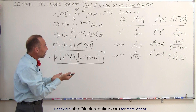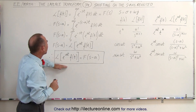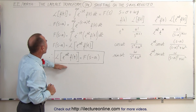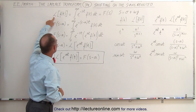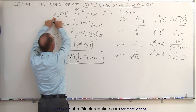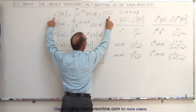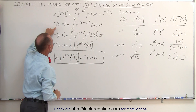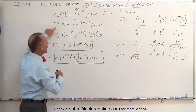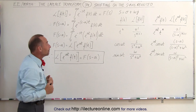We have a way of transferring that back into the time domain. Let's go back to our main definition and say that the Laplace transform of F of T is equal to F of S. Now, what if we have a shift and we write S minus A? We want to know how to transfer that back into the time domain.